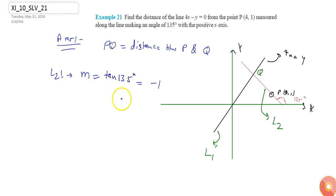Now L2 passes through the point (4, 1), so I can write y minus 1 equals m is minus 1 times x minus 4. Or I can say y minus 1 equals minus x plus 4, or it will be x plus y equals 5. So this is equation number 1.